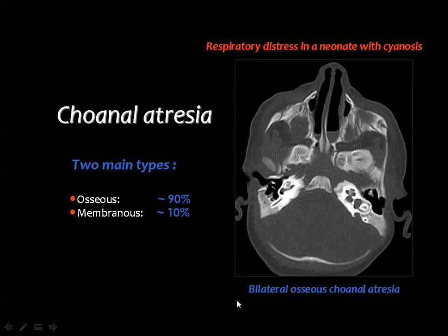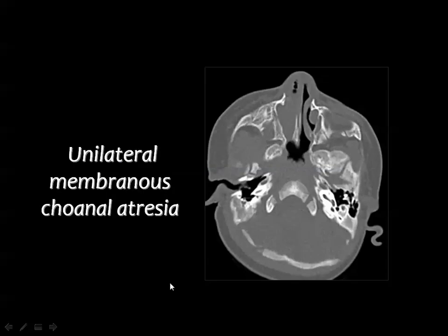We have two main types of atresia: the osseous type, which is very common compared to the membranous type. In axial CT images, we look at the posterior choana, and you can see a bony ridge obstructing the posterior nares bilaterally, along with accumulation of secretions proximal to the site of atresia.